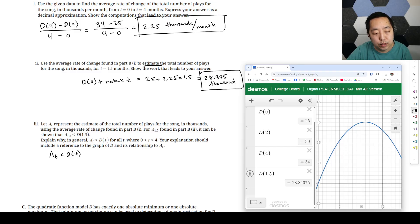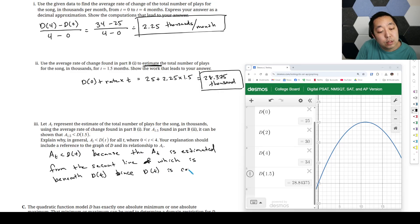Let me look up what the exact reasoning that they would expect in something like this. So we do use concavity. It's because the secant line, because it's concave down, or actually it's between here and here. Because it's concave down, the secant line is going to be beneath the graph. That's why an underestimate. Because the A(t) is estimated from the secant line, which is beneath D(t), because since D(t) is concave down. So some kind of reasoning like that is what you would want to put in.